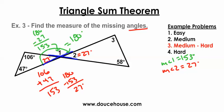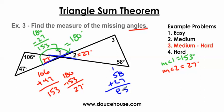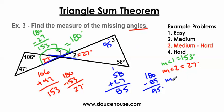Now my goal is to find angle 3. I know two out of the three angles in that triangle, so I can add 58 plus 27, which is 85, and then 180 minus 85 gives me 95 degrees. The measure of angle 3 is 95 degrees.